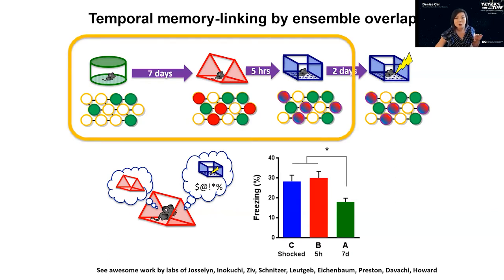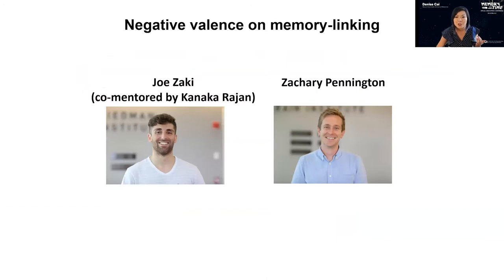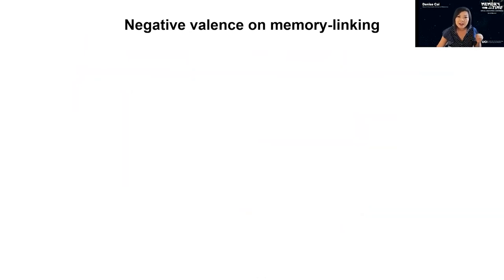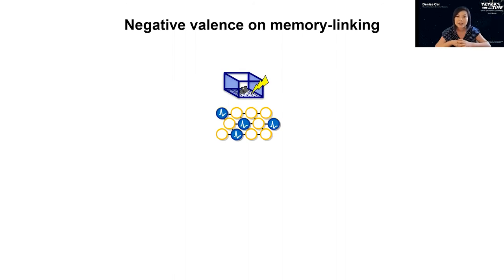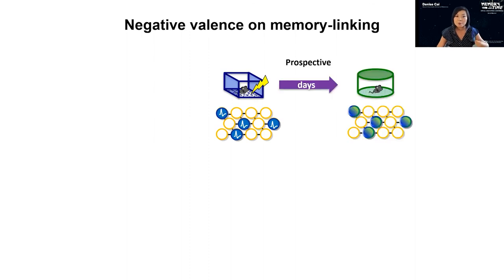This postdoc work looked at everyday neutral experiences, but we wanted to know: what happens if you make one of them really aversive — does that alter the way memories are linked across time? These studies were led by talented PhD student Joe Zaki, co-mentored by Kanika Bhatt and Rajan, and postdoc Zach Pennington. They asked: if animals get shocked the very first time they enter a context, does this alter prospective linking, perhaps extending the window for memories to get linked to subsequent experiences?